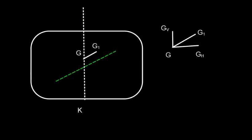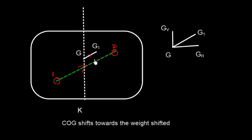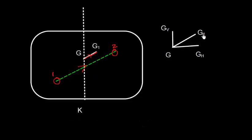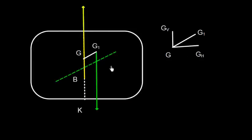Now let us consider the scenario where a weight is shifted from position 1 to position 2. The center of gravity of the ship will also shift in that direction from G to G1. This G to G1 will have two components: the horizontal component GGH and the vertical component GGV. The weight force will shift from G to G1.